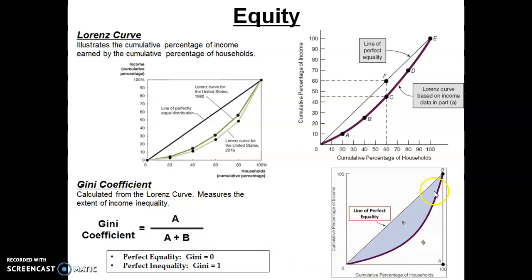It's looking at the area of inequality relative to the entire potential area of inequality. Because if the Lorenz curve continues to bow out, eventually it fills the entire area A and B — that would be a perfectly unequal economy, where one household gets all the income and all others get nothing. Using this formula, if area A is 0, the Lorenz curve must be perfectly aligned with the line of equality — 0 over anything is 0 — so perfect equality is represented by a Gini of 0.